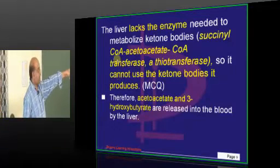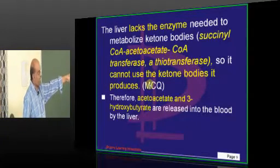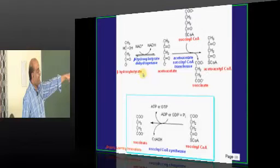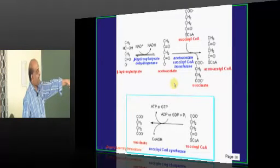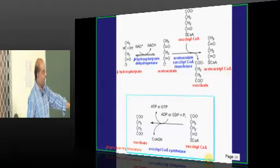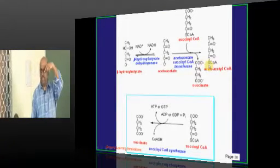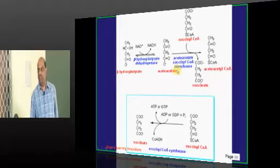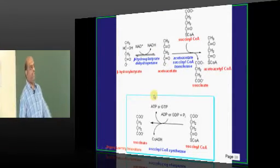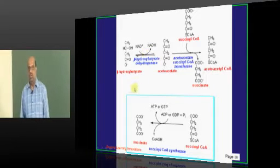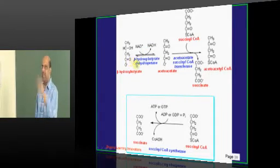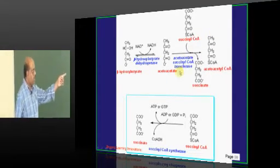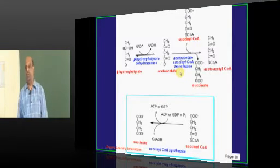So what is that enzyme? There is something called succinyl-CoA acetoacetate CoA transferase. It is also called thiotransferase. Only if it is available then the acetoacetate can be reconverted into acetoacetyl-CoA which can be converted into acetyl-CoA. This enzyme, acetoacetate succinyl-CoA transferase, is missing in the liver. One of the favorite MCQs of the examiner: which enzyme for the utilization of ketone bodies is missing in the liver so that it can't use the ketone bodies. It can only produce the ketone bodies. It is the acetoacetate succinyl-CoA transferase is what you have to remember reflexly.